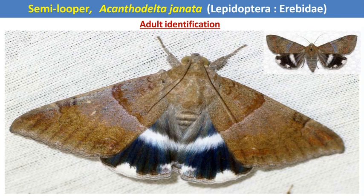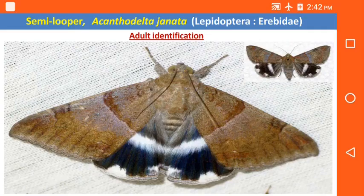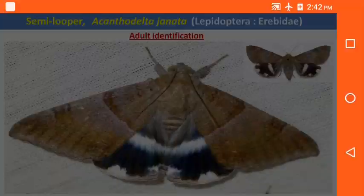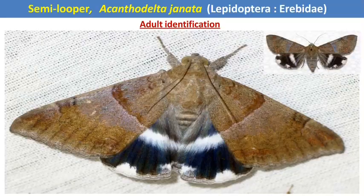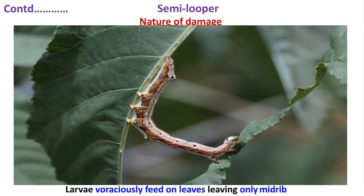The larva of castor semilooper only feeds on castor — so in castor crop, the larva is the damaging stage. But in the case of fruit crops like citrus, pomegranate, or mango, the adult is the damaging stage, because the adult acts as a fruit-sucking moth. The castor semilooper adult sucks juice from different fruit crops, meaning the adult host of the castor semilooper are different fruit crops like citrus, pomegranate, and mango, while in castor the larva is the damaging stage.